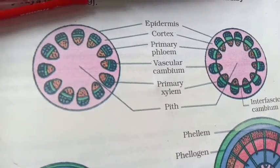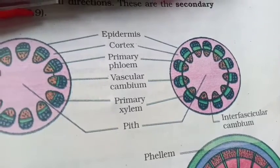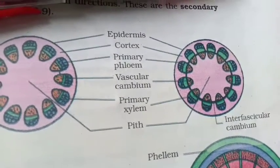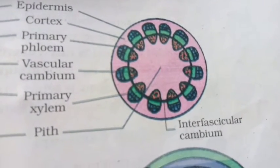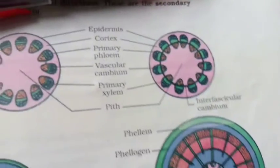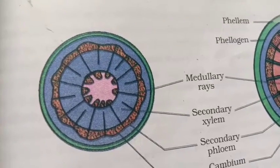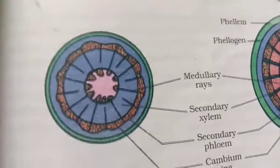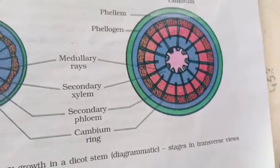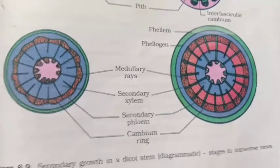You may have the view of the transverse section of the dicot stem and see the different regions: firstly epidermis and the cortex, followed by primary phloem, vascular cambium, and then primary xylem, with the pith at the center. You may also see the interfascicular cambium that lies between the vascular bundles. This ring grows, matures and then expands, resulting in the increase in the girth of the plant, as the different tissues expand accordingly.